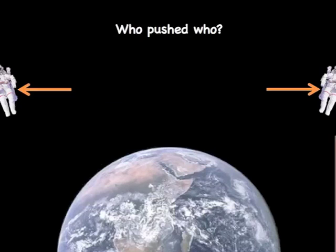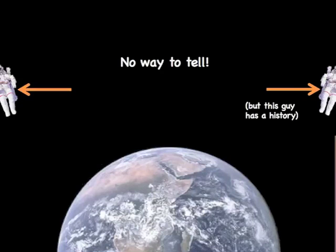I get asked the question, which one of the astronauts was it that actually pushed the other? Or did they both push on each other? And the answer, believe it or not, is that it doesn't really matter. It's impossible for one astronaut to push on the other without having that Newton's third law, that equal and opposite reactionary force.